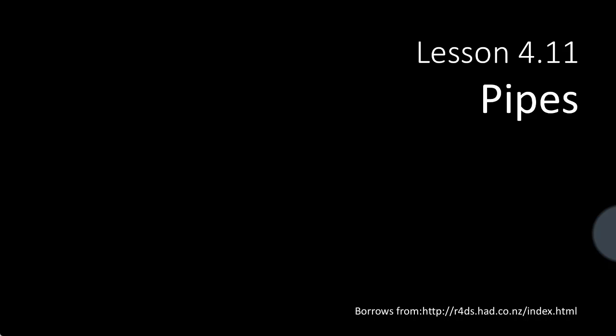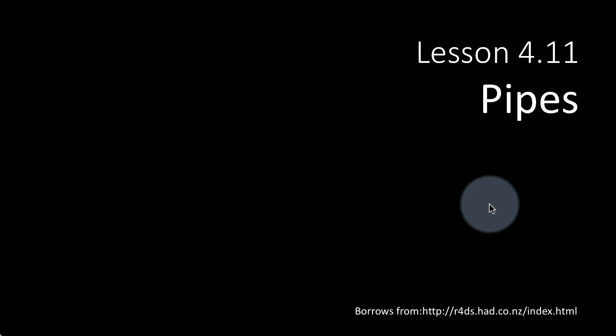We now turn our attention to the feature in dplyr called pipes. It's an incredibly useful feature, especially because very often we are given a large dataset and then perform many different operations on it to get our final result. When you assign every result to a new variable, you end up creating a lot of variables and the code becomes really difficult to read. Pipes allow us to write code in a very intuitive manner.